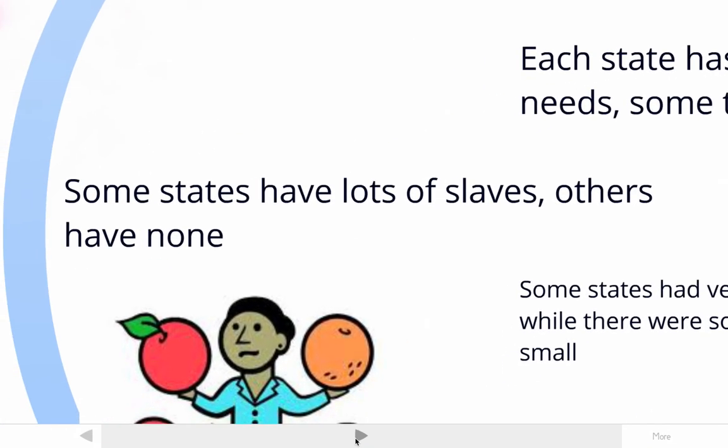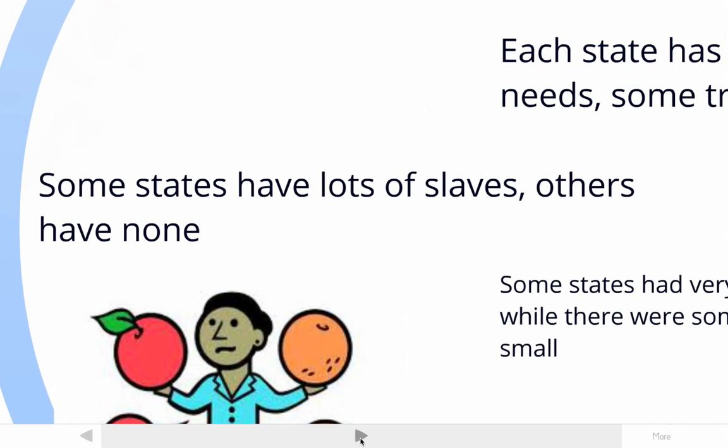Another big issue was slavery. Some states had lots of slaves — Virginia had almost 300,000 slaves — where other states, like Massachusetts, had absolutely no slavery at all, not one slave in the state. So that is going to become a sticking point at the convention as well.